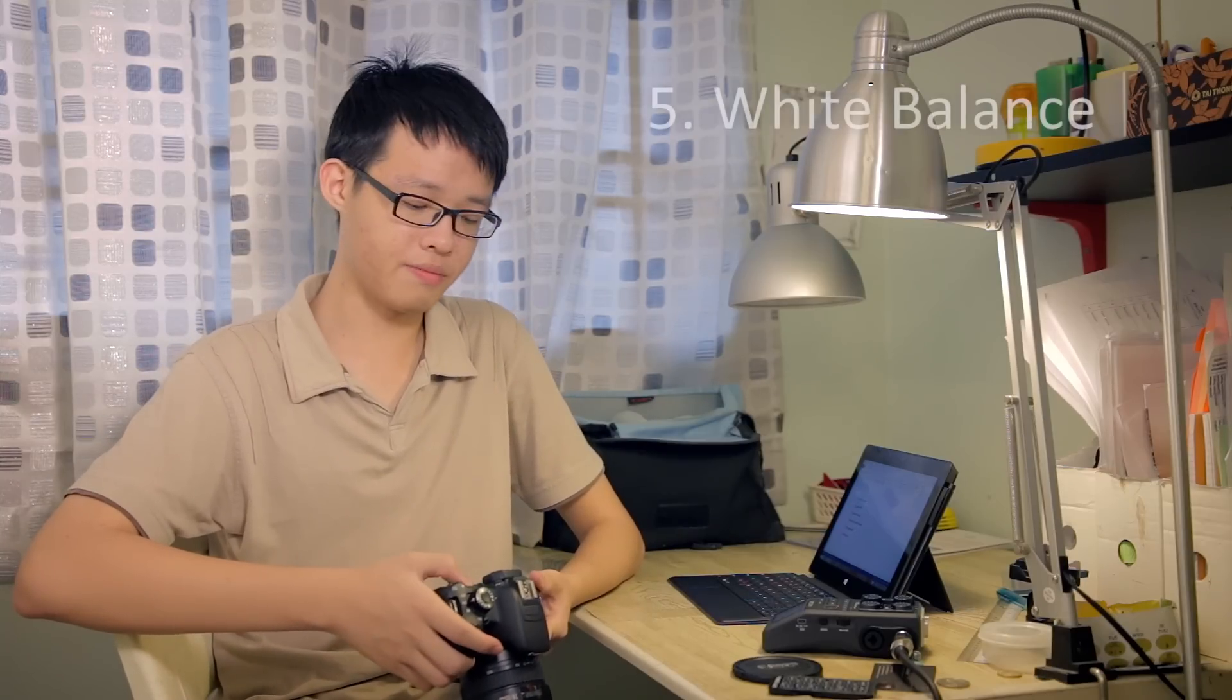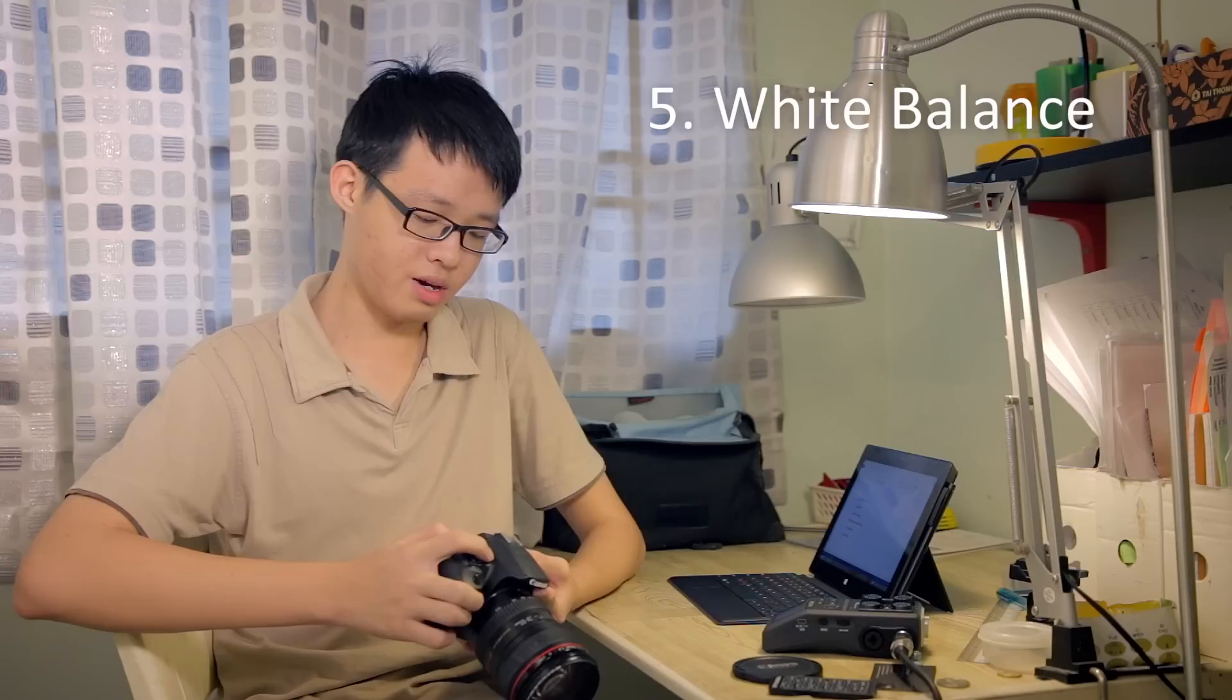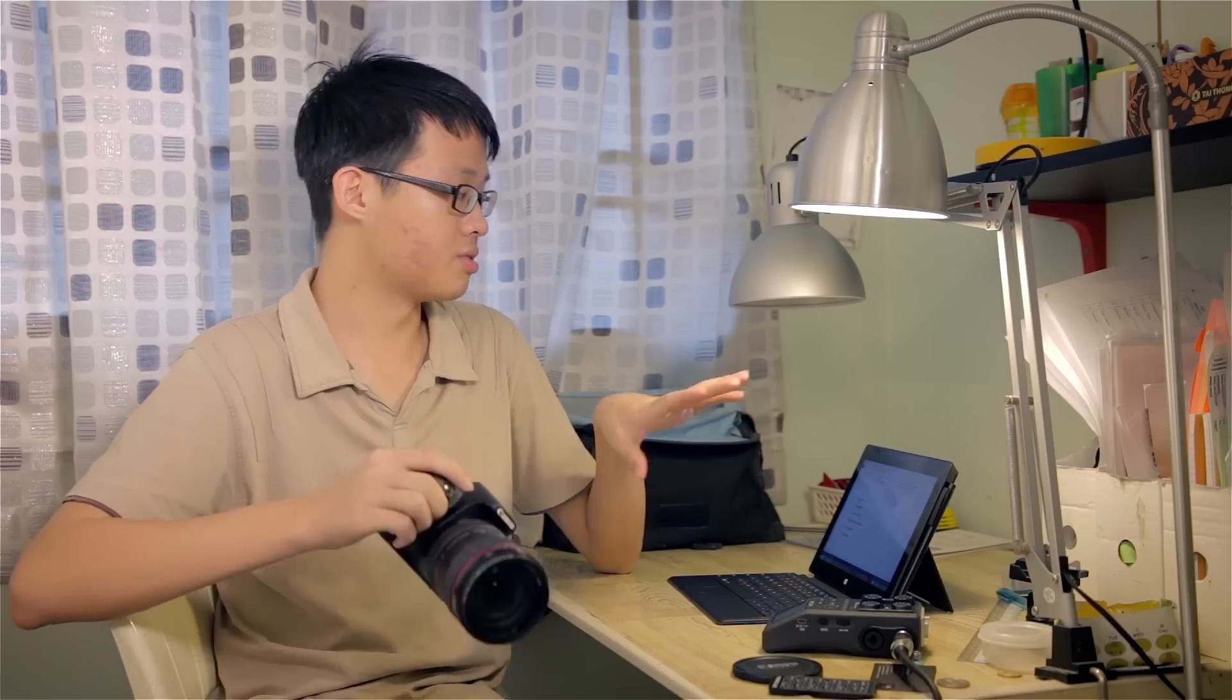So at number five is the Advanced Custom White Balance. Now if you're using a Rebel body, that means you're not using a Semi-Pro body or a Pro body, then you don't really have the ability to set a Custom Kelvin value on your white balance. But now with Magic Lantern, you can actually do that.